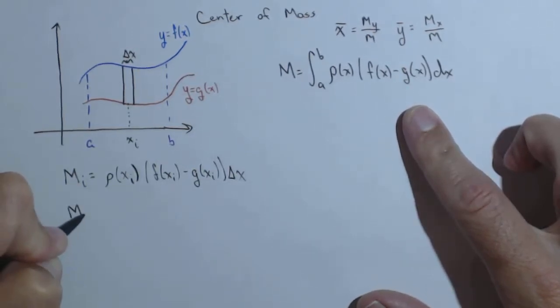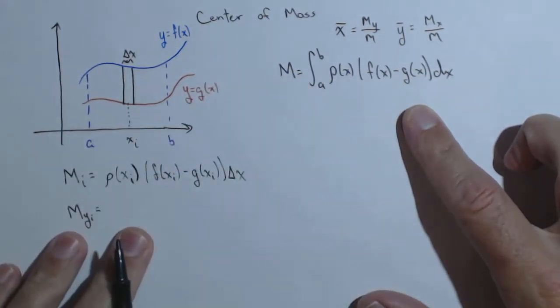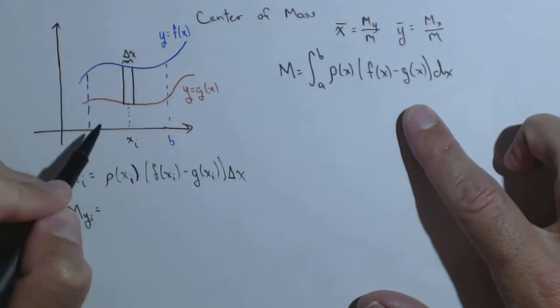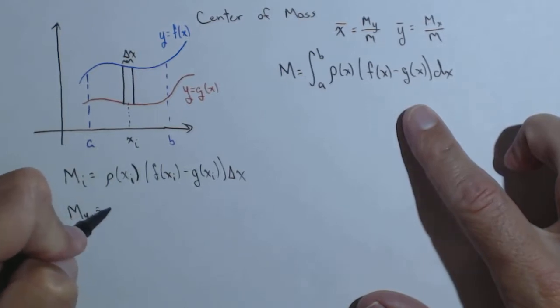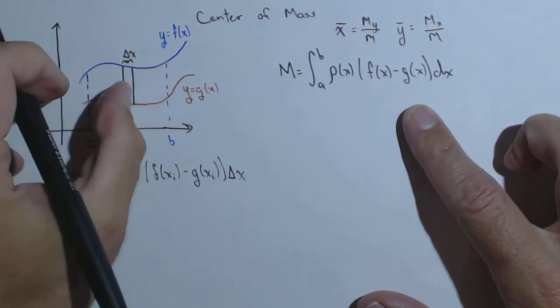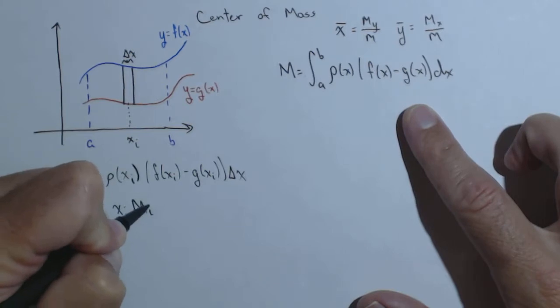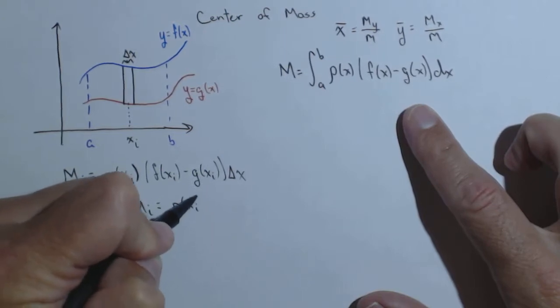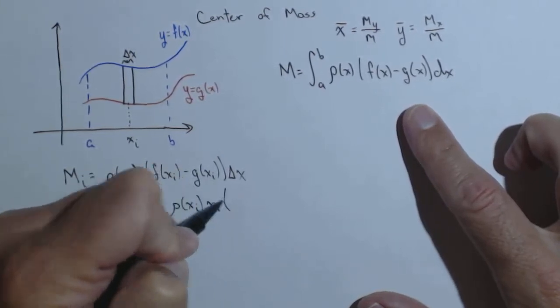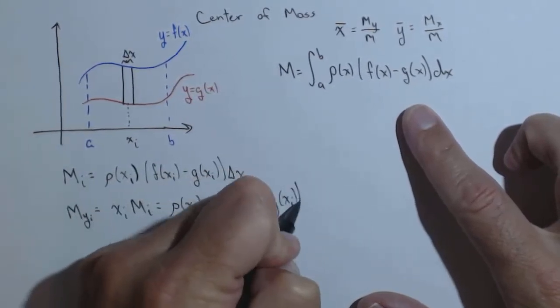Okay, next up: m sub y sub i. So we're going to look at the moment on that i-th slice, and then we'll generalize it to a definite integral very quickly. So that moment on the i-th slice is going to be the mass, which we know, times its distance from the axis. So the distance from the axis, the y-axis, is just x sub i. So it's going to be x sub i times m sub i. So we have, I'm going to put rho out front because sometimes that'll be constant and we can pull it out, times f of x sub i minus g of x sub i delta x.